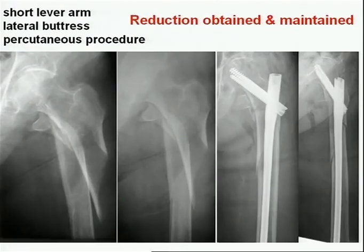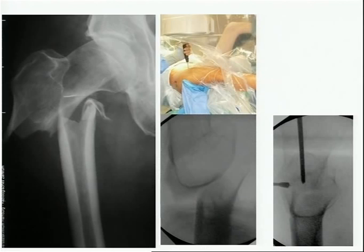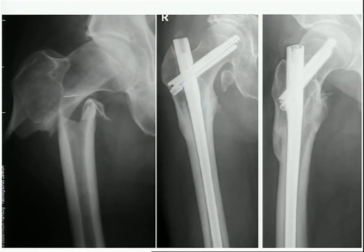In this case, reduction was obtained percutaneously, a nail was inserted, and the reduction was maintained because there was an intramedullary canal. If you have a long proximal fragment, it's no problem at all to maintain reduction — you can hardly see the fracture. Also in short fragments, if you have good bone quality and a transverse fracture line, once you obtain your reduction the nail can maintain it and you're well off with a healed bone.